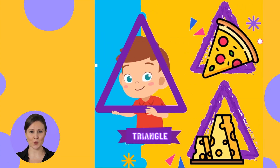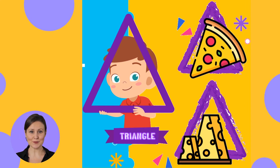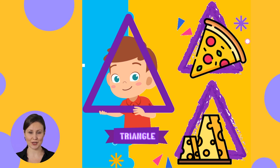The triangle is a regular polygon made up of three sides. What are you thinking that looks like a triangle? Yummy! A piece of pizza looks like a triangle. Also, a slice of cheese. Can you see near you any other shapes like a triangle?